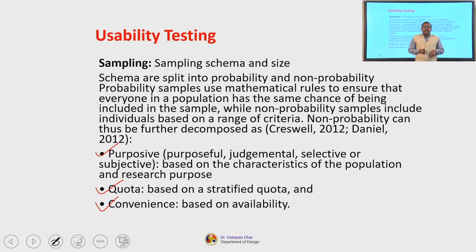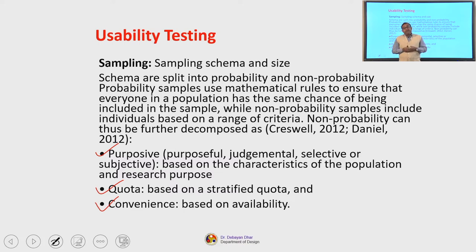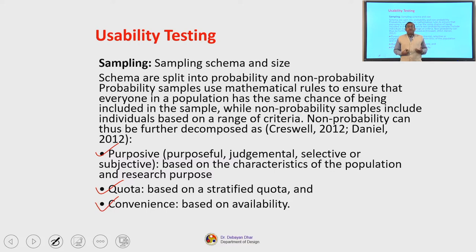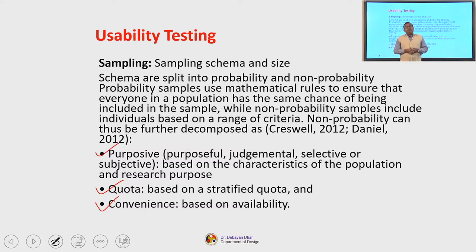The other type, called convenience sampling, is generally used in healthcare. For example, if you want to see how a particular treatment affects a group of people suffering from a condition, it is not possible for doctors or researchers in healthcare innovation to conduct this study randomly. So based on the availability and the patients who are coming for treatment, they use those as samples for doing their experiments. That is called convenience sampling.